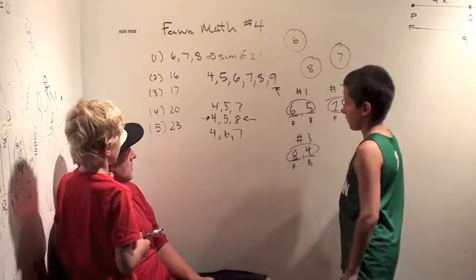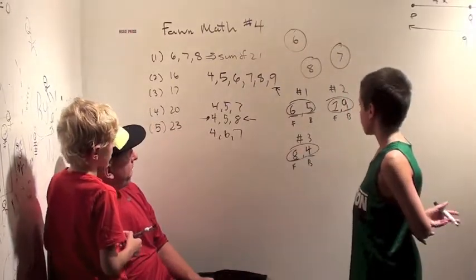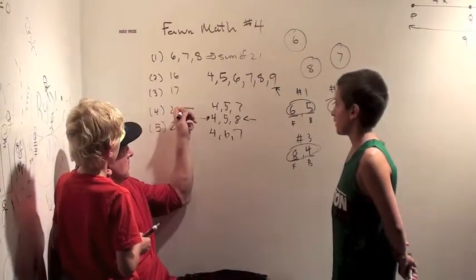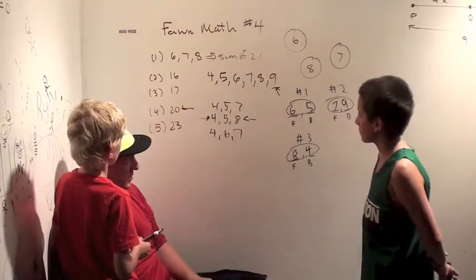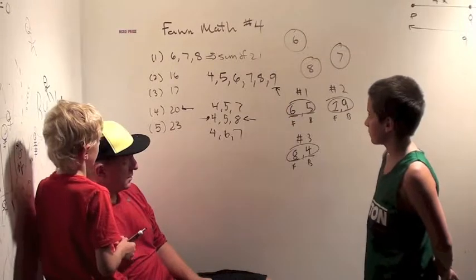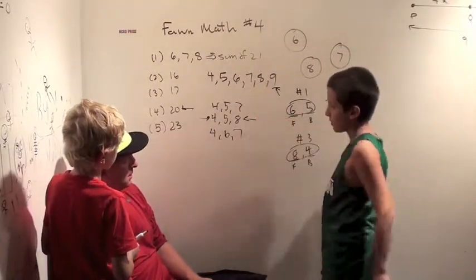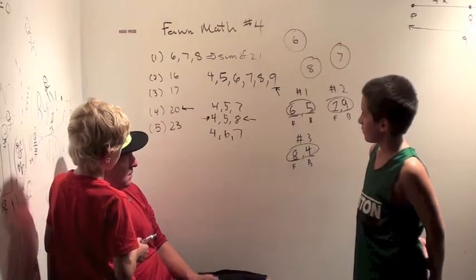Alright. Well, what adds up to 20? What do you mean? Well, the sums for 20. What were the numbers that summed up to be 20? Well, we can do four, seven, nine. Four, seven, nine, yeah. Four, seven, nine, does that work?